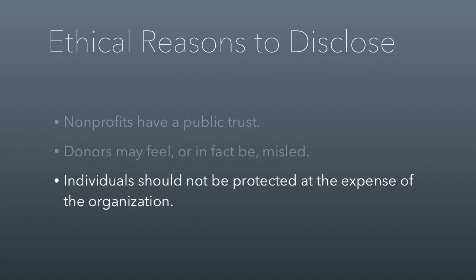Too often we see scandals in the nonprofit sector involving insiders who are protected because they don't want to disclose a bad thing to the public. If they let the person go, it would become public. But the reality is: anytime something goes wrong that the public has a right to know, even if it's going to cost somebody their reputation, it's better to disclose. If you get caught protecting somebody and keeping information secret, it's going to be a lot worse than if you'd just let them go and made the information public from the beginning.